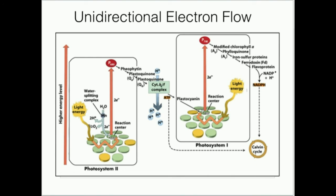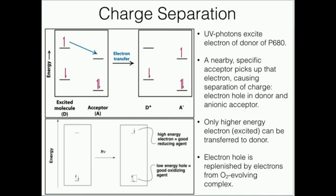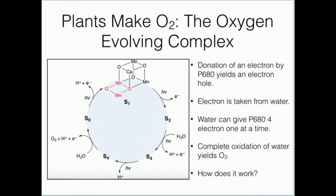So hopefully that kind of brings some of this together, and some details that you learned a long time ago. Water donates electrons to P680 to fill the electron holes that are produced from these electron transfers, and here's our electron hole state right there. In order to get back to this state, you have to receive an electron from the oxygen evolving complex.